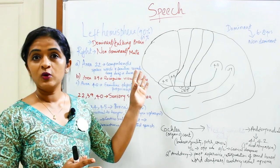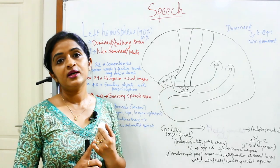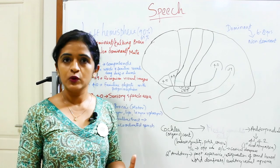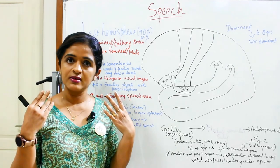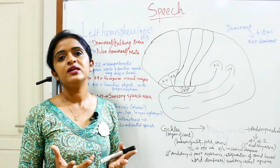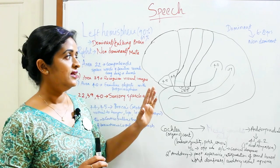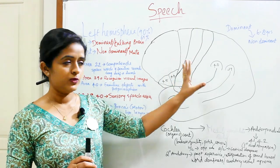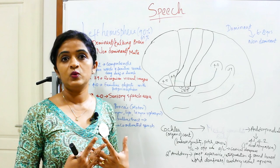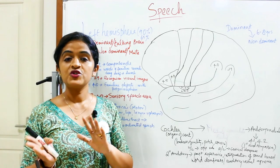Speech is a unique property of human beings. When we talk about the areas which control speech in the human brain, we have to think about what all things are involved in order to speak a few words. We need some sensations — we need to hear something, understand something written, feel something — and all these are integrated. That is the reason why we are able to speak. There are mainly four regions on the supralateral surface of the human brain which act in a coordinated way.